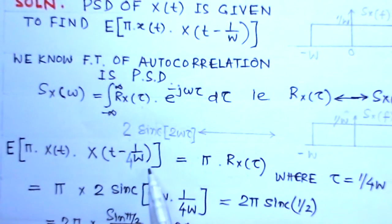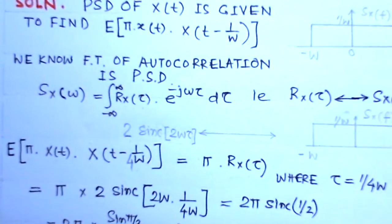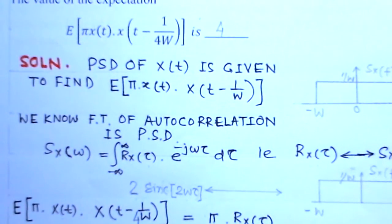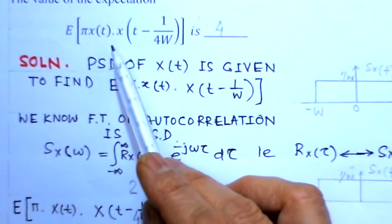So π into 2 sinc of 1/2, and sinc of 1/2 is sin(π/2) over π/2. If we simplify this it gives me 4. So this is the value of 4, meaning this function has the value of 4.